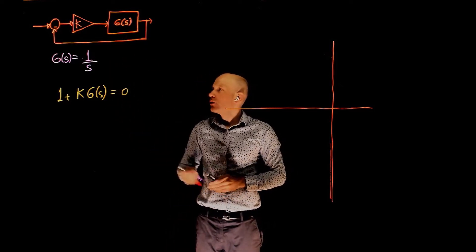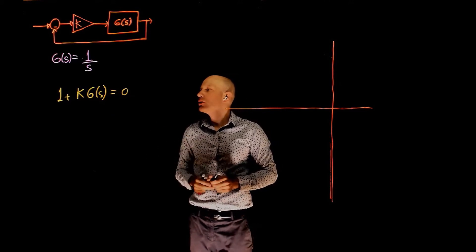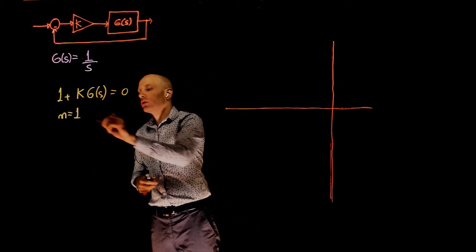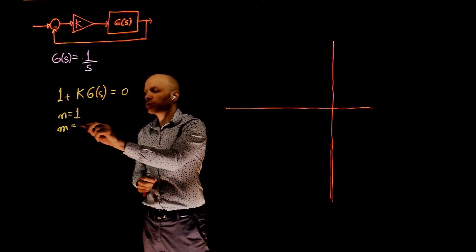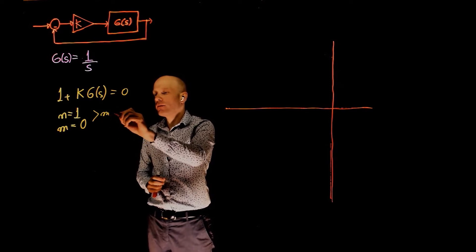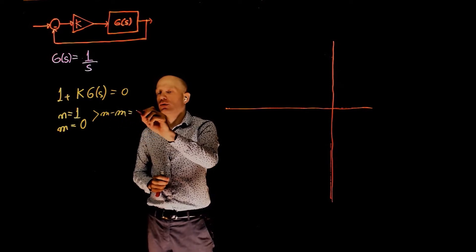With this transfer function, we have only one pole, n equals 1, and we have no zeros, m equals 0, which means that n minus m is equal to 1.